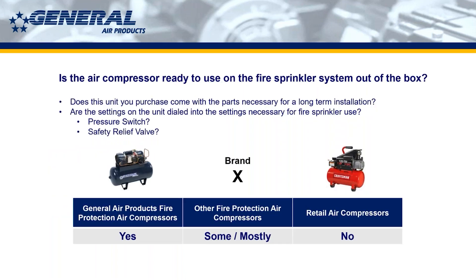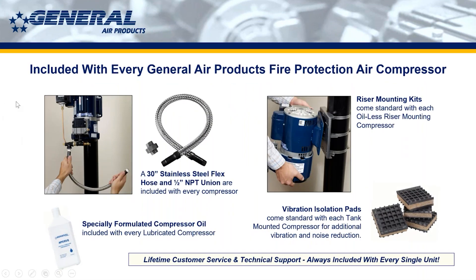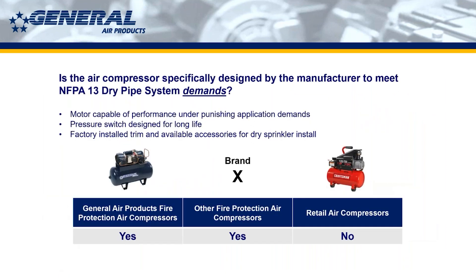Is the compressor ready for use on the fire sprinkler system out of the box? If it calls itself a fire protection air compressor, it should be. That means it includes a pressure switch set to the right settings and a safety relief valve set at the right pressure. At General Air Products we also include a stainless steel flex hose with a union, vibration pads on tank-mounted units, a riser mounting bracket with riser-mounted compressors, and oil with oil-lubricated units.